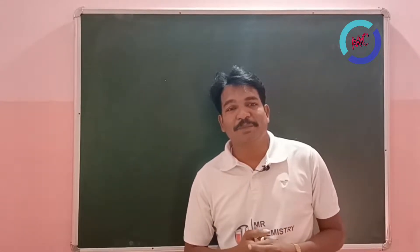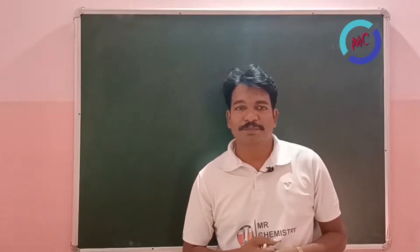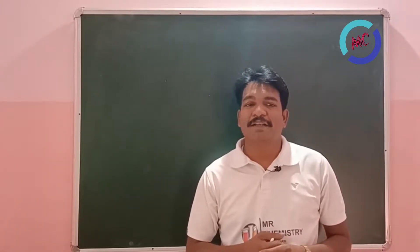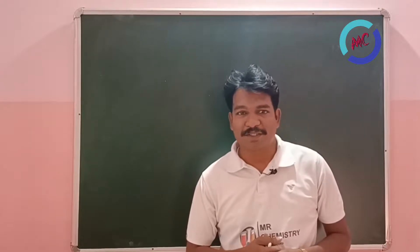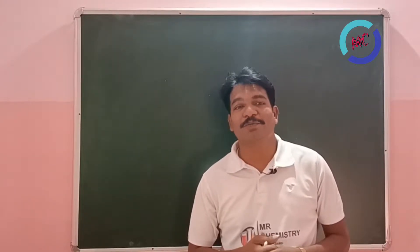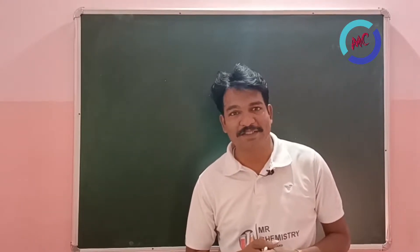What is the spin multiplicity of ferric ion in its ground state? How to find spin multiplicity?